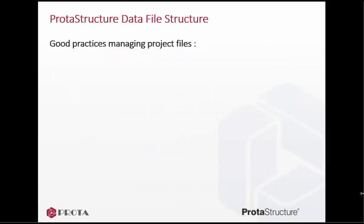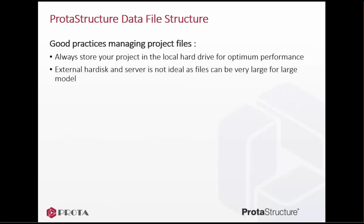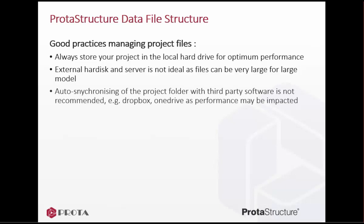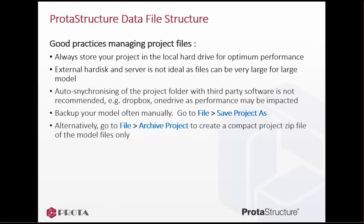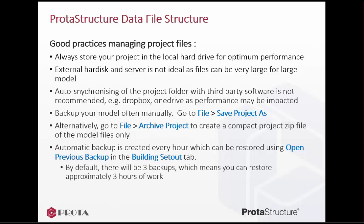Here are a few recommended good practices for managing project files. Always store your project on the local hard drive for best performance. External hard disks and servers are not ideal as files can be very large for large models, as they include analysis, design reports, and drawings. Auto-synchronizing of the project folder with third-party software such as Dropbox or OneDrive is not recommended, as performance may be impacted due to additional memory resources required. Back up your model often — manually go to File > Save Project As and save it as another name, or go to File > Archive Project to create a compact project zip file of the model files only. Automatic backup is also created every hour, which can be restored using the 'Open Previous Backup' function in the Building Set Out tab. By default, there will be three backups done every hour.